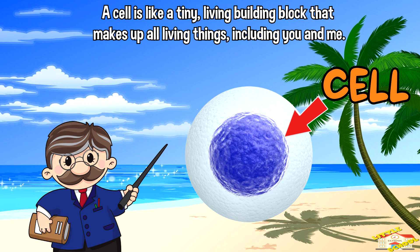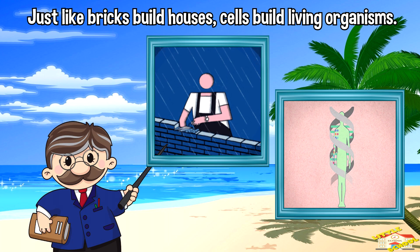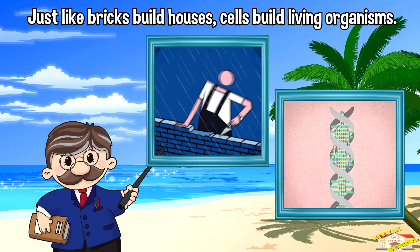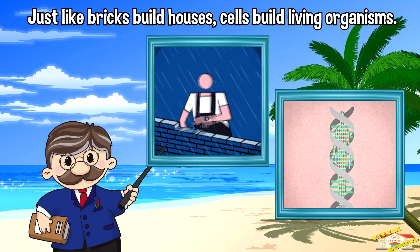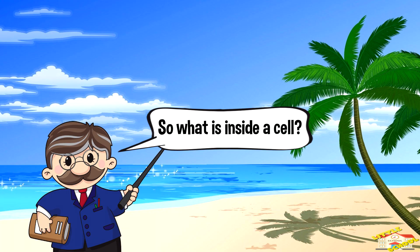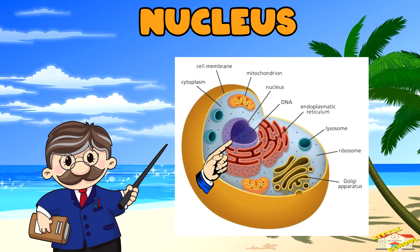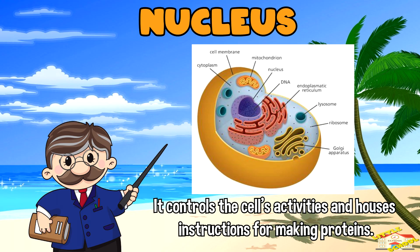Just like bricks build houses, cells build living organisms. So what is inside a cell? Inside a cell there are different parts called organelles that have specific jobs. For example, this is the nucleus, often referred to as the brain of the cell.